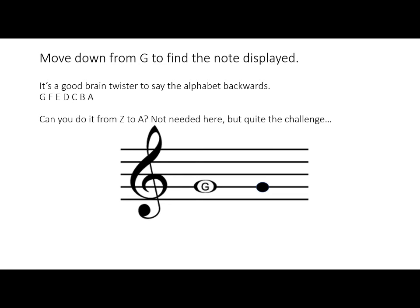It's a good brain twister to be able to say the musical alphabet backwards. Easy enough to say A, B, C, D, E, F, G. But counting backwards is G, F, E, D, C, B, A.